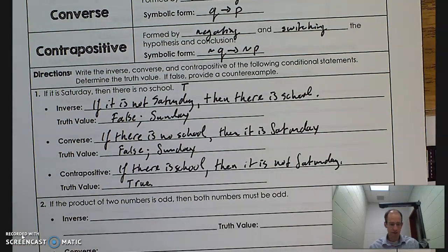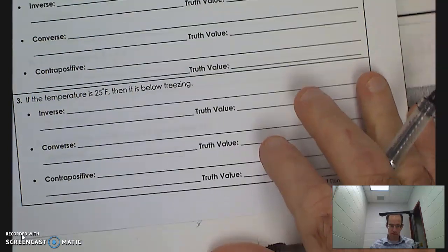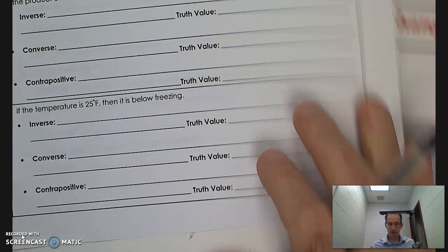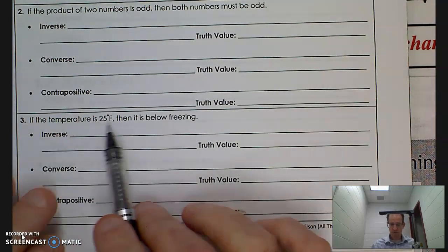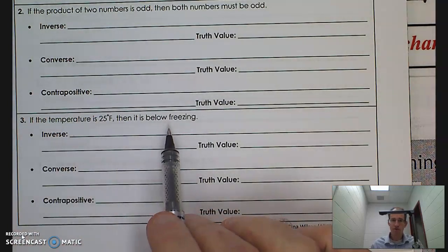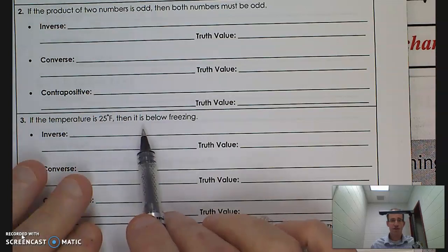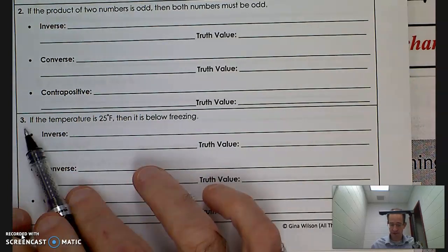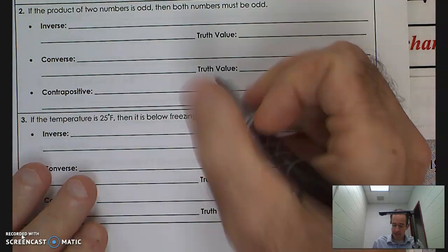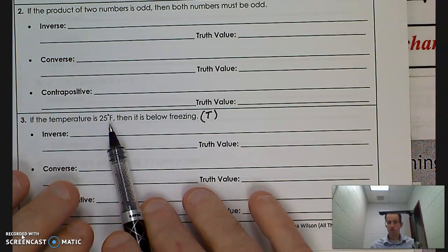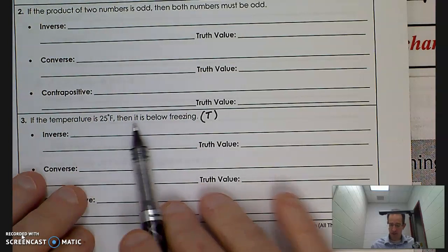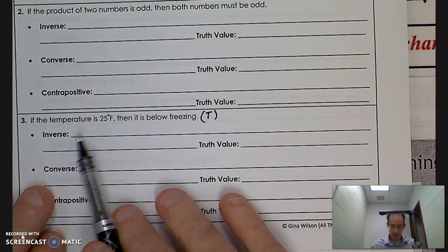Let's try question three and see if we can find a pattern — some inductive reasoning. 'If the temperature is 25 degrees, then it is below freezing.' This is the original conditional statement: if hypothesis then conclusion. Its truth value is true — if the temperature is 25 degrees, that's below 32 degrees, so it is below freezing.